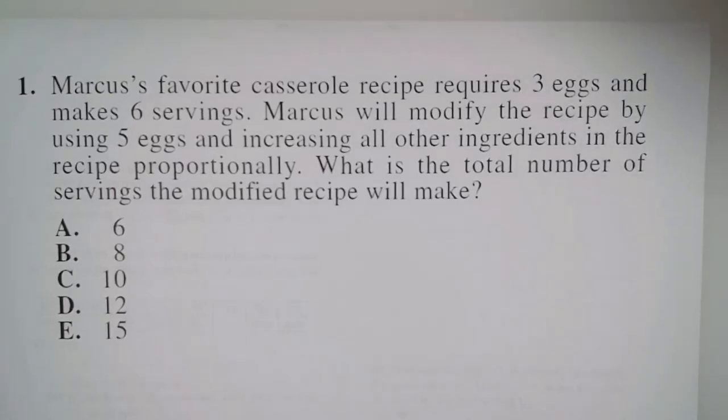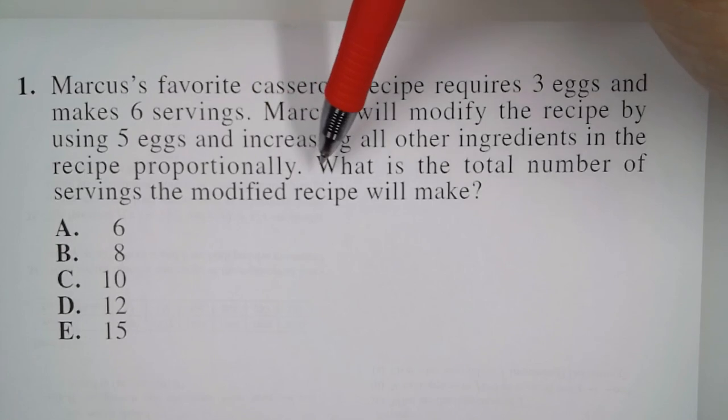So in problem one, it says Marcus's favorite casserole recipe requires three eggs and makes six servings. Marcus will modify the recipe by using five eggs and increasing all the other ingredients in the recipe proportionally. What is the total number of servings the modified recipe will make?